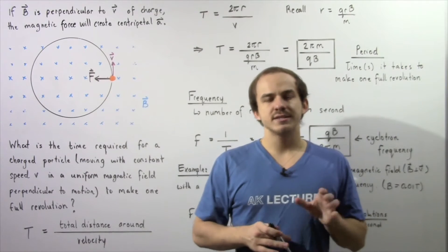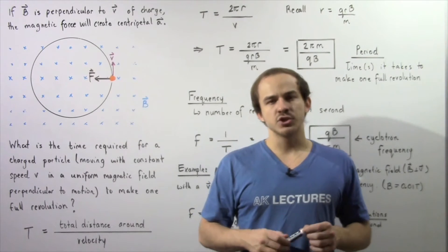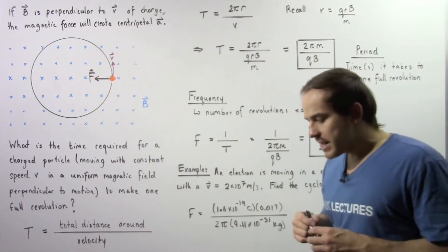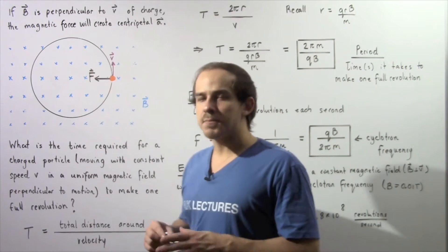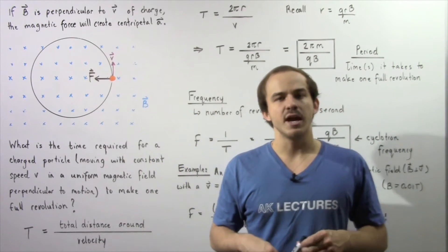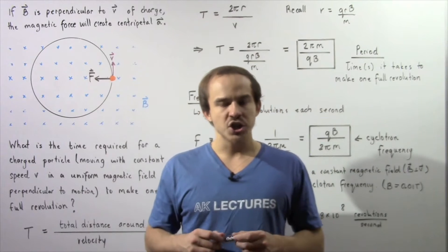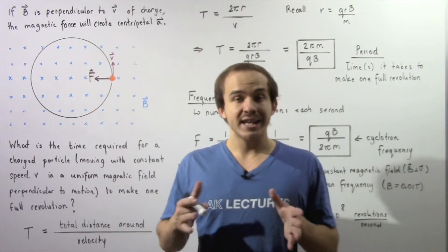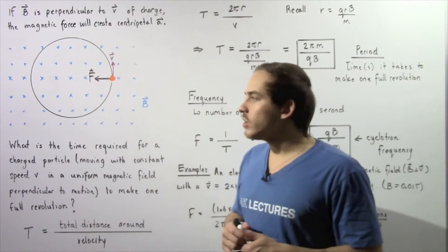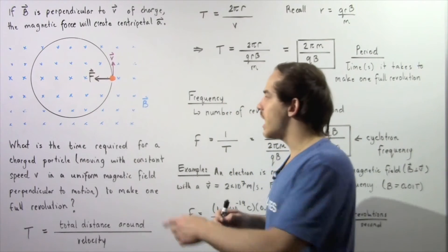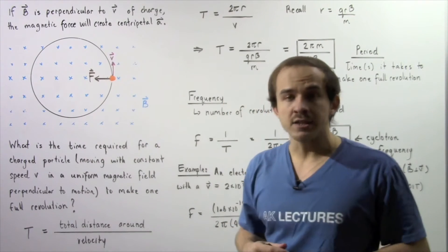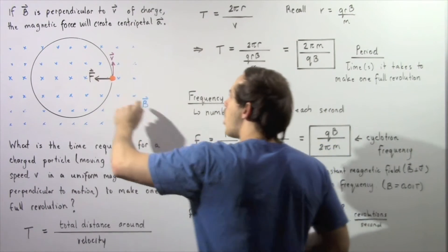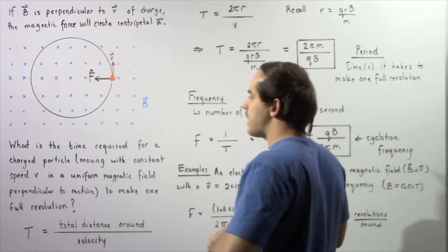In the previous lecture, we discussed the motion of an electric charge within a uniform magnetic field. We said that if the uniform magnetic field is perpendicular to the velocity of our electric charge, that electric charge will follow a circular pathway. The magnetic force acting on our electric charge as a result of the magnetic field will create centripetal acceleration, so our electric charge will follow a cyclical pathway.